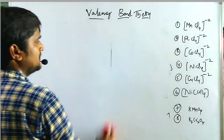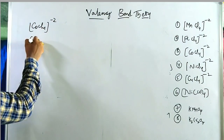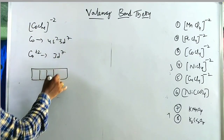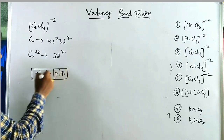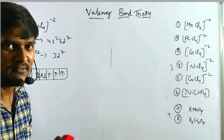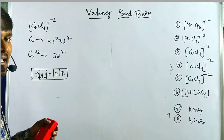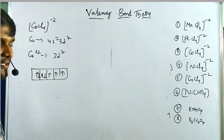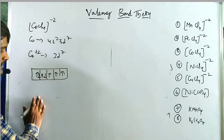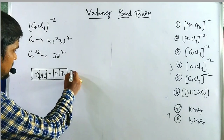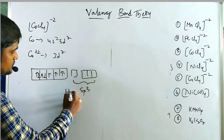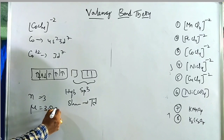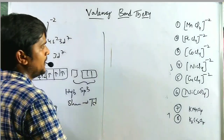Third tetrahedral example: [CoCl₄]²⁻. Cobalt configuration is 4s² 3d⁷. Co²⁺ gives 3d⁷ configuration with 7 electrons. The complex has weak field ligands so Hund's rule is followed. Using s and p orbitals, hybridization is sp³, shape is tetrahedral. n = 3, μ = 3.89 Bohr magnetons — paramagnetic. Fourth tetrahedral example: [NiCl₄]²⁻. Nickel configuration is 4s² 3d⁸. Ni²⁺ gives 3d⁸ with 8 electrons — only 2 unpaired electrons. We need 4 orbitals (sp³). n = 2, μ = 2.828 Bohr magnetons — paramagnetic. Hybridization sp³, shape is tetrahedral.